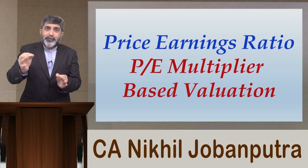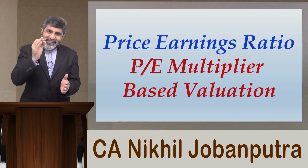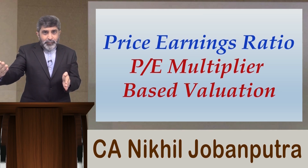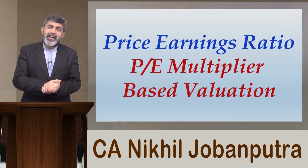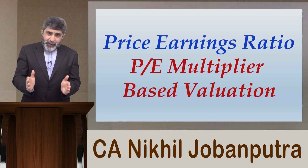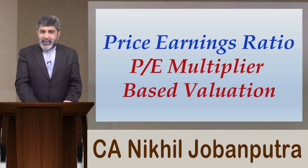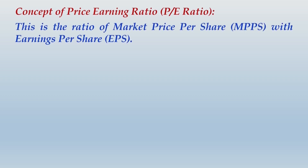Both scenarios — current price with expected EPS, or current price with current EPS — are possible. The language of the question is very important in determining which applies. The PE ratio concept and formula remain the same: PE ratio = market price per share ÷ earnings per share (MPPS ÷ EPS).